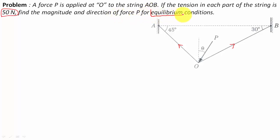Find the magnitude and direction of force P for equilibrium conditions. This word 'equilibrium condition' is extremely important. When you speak of equilibrium condition, you have the summation of all the forces in x direction equal to zero, and at the same time the summation of all the forces in the y direction also is going to be equal to zero.